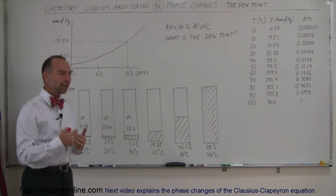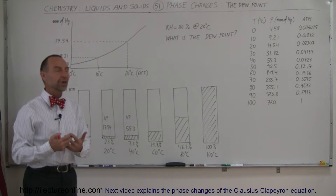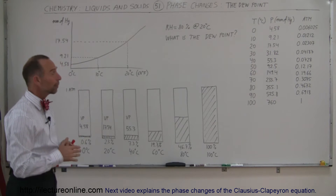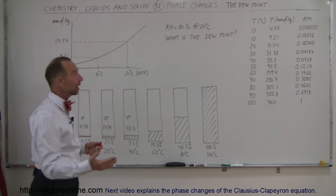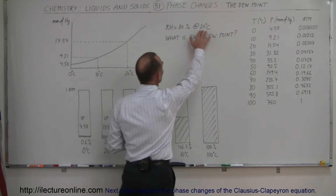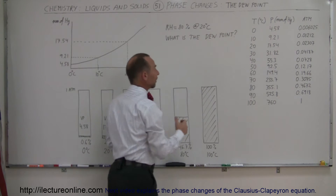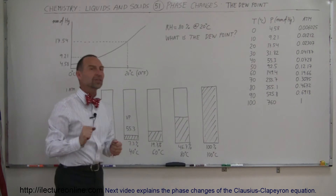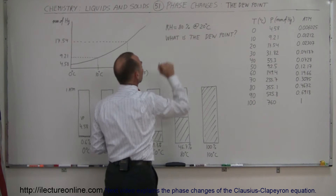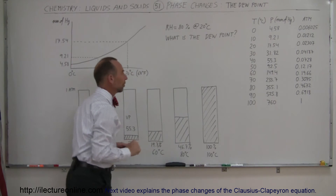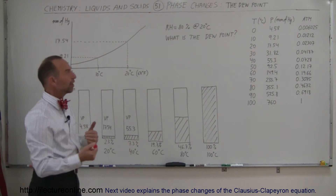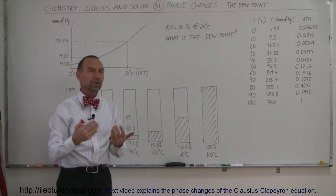So what causes that to happen? Let's say, for example, that it's a nice afternoon, the temperature is 20 degrees centigrade, which is about 68 degrees Fahrenheit, and the relative humidity is 80%. So the question would be: what is the dew point?